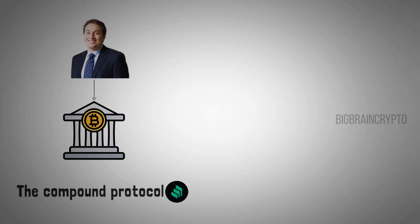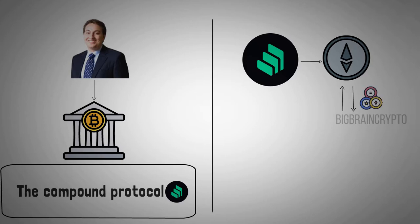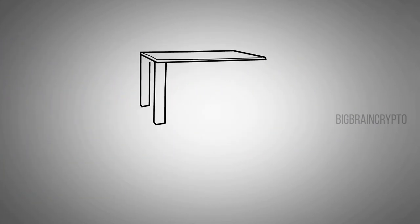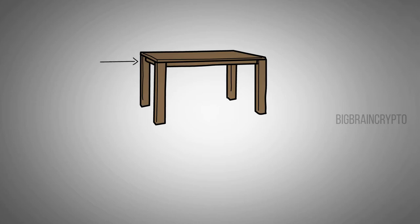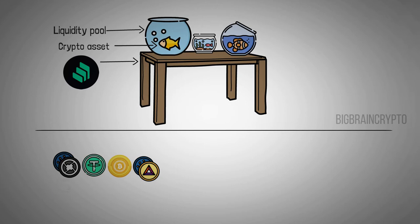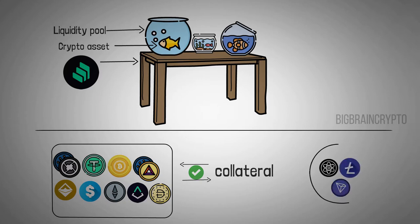The Compound Protocol is an Ethereum-built decentralized finance protocol that allows users to borrow or lend crypto assets using any other supported asset as collateral for a dynamic interest rate. Let's make it simple. Imagine a table — this is the Compound Protocol. The table has many water-filled bowls; this is the liquidity pool. Each bowl has a different type of fish; this is the crypto asset stored in the liquidity pools. You can give or take fish, i.e., lending or borrowing crypto assets, but you cannot add a type of fish that is not already there. If a crypto asset is not supported on the protocol, you cannot lend it or use it as collateral.